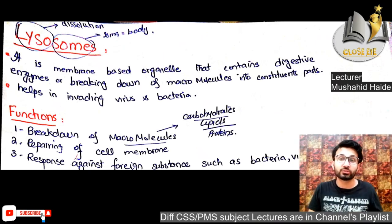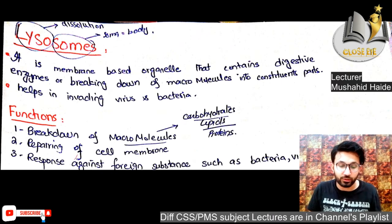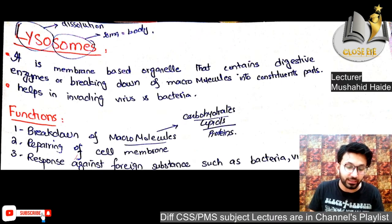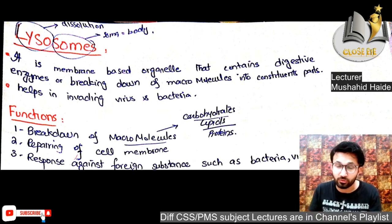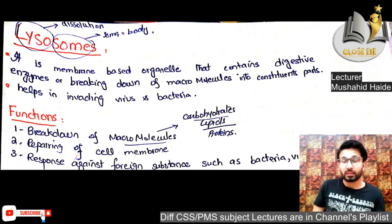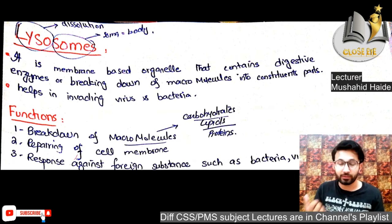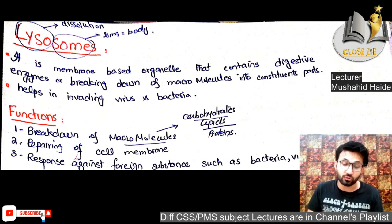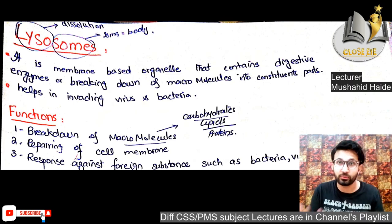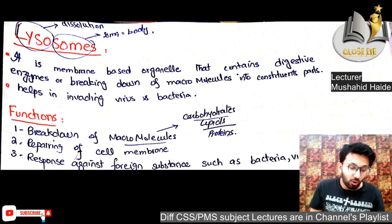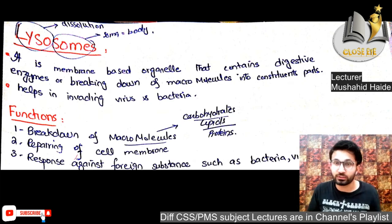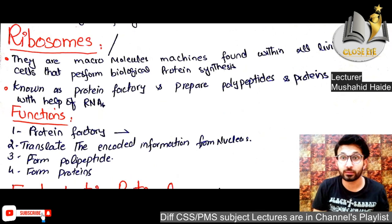Lysosomes are organelles that help in cell digestion. They are membrane-bound organelles containing digestive enzymes that break down macromolecules into their constituents. Lysosomes also help in invading bacteria — if you have a strong immune system, the cells can fight bacteria and viruses. Functions include breakdown of macromolecules such as carbohydrates, lipids, and proteins, and repairing of cell membranes. They also act as an immune response against foreign substances such as bacteria and viruses.